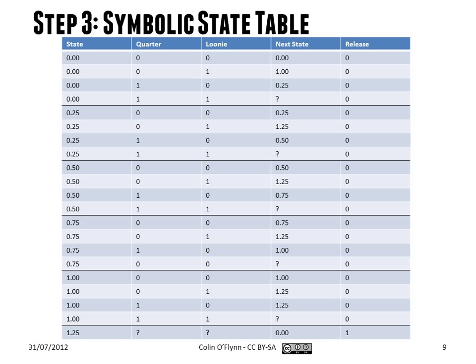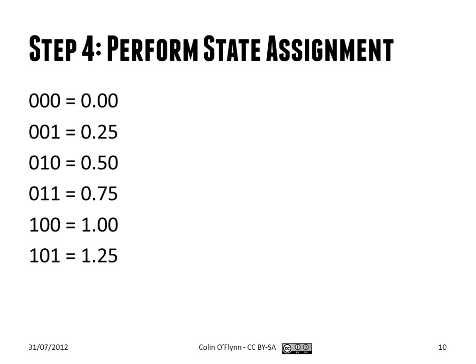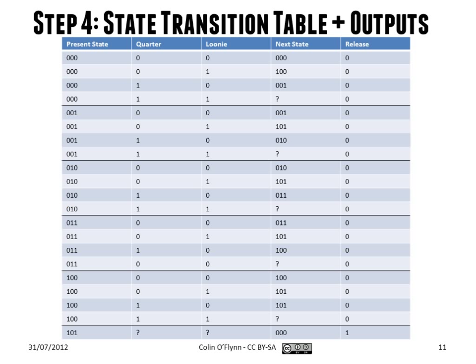In step three, we create a symbolic table. This table is the exact same as the previous diagram — for example, from the zero cent state, if you put in a loony, you move to the $1 state. Or if you're in the 50 cent state and you put in a quarter, you move to the 75 cent state. This is just the state diagram written in table form. Then we perform state assignments — instead of 75 cents, we say that's represented by binary 011.